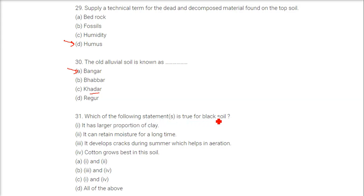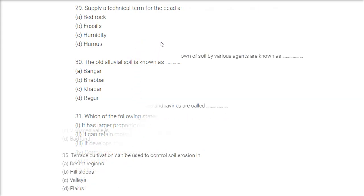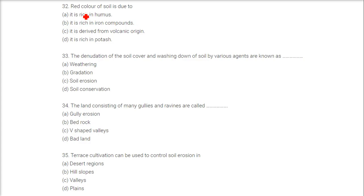Which of the following statements is true for black soil? The answer is all of the above: it has a larger portion of clay, it can retain moisture for a long time, it develops cracks during summer which helps in aeration, and cotton grows best in this soil. The red color of soil is due to it being rich in iron compounds.